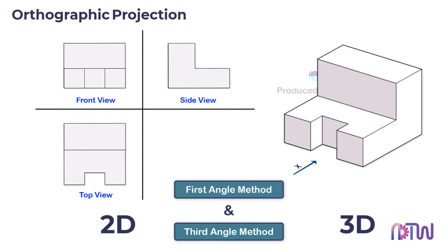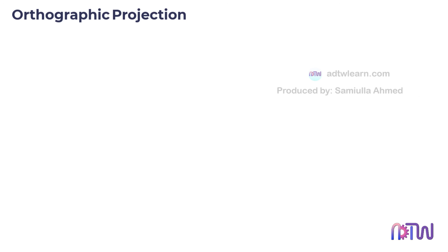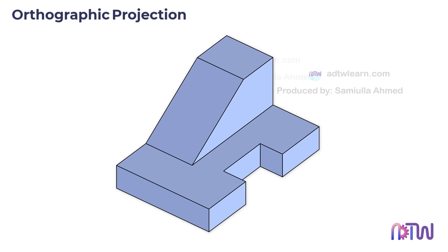These methods are largely used in industries. If you want to know what the first angle and third angle projection methods mean, you can get the video link in the description or the 'i' button in this video. We will learn how to draw an orthographic view from an isometric view of an object. Isometric view is a graphical method of representing a three-dimensional object. An orthographic view is a means of representing a three-dimensional object in two dimensions — it has only two axes.